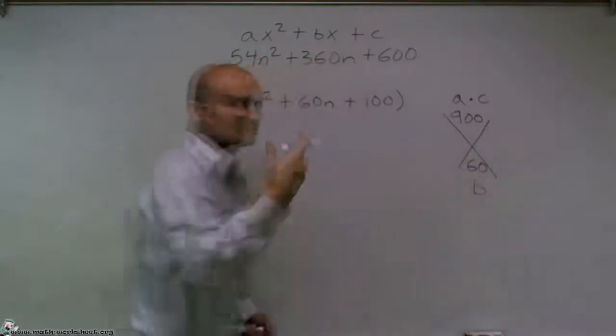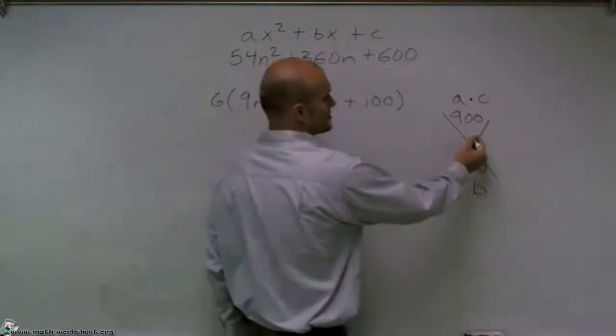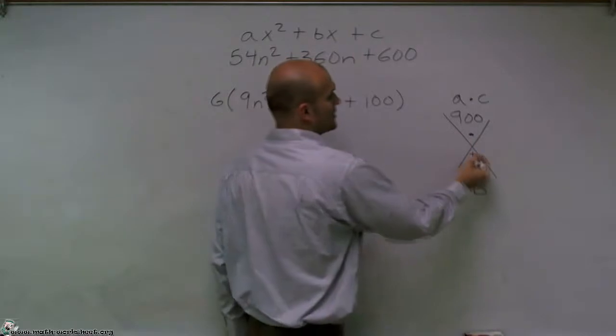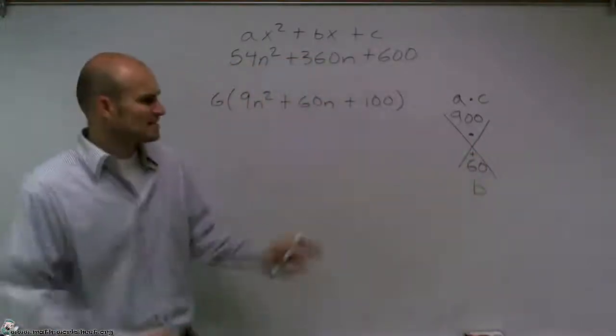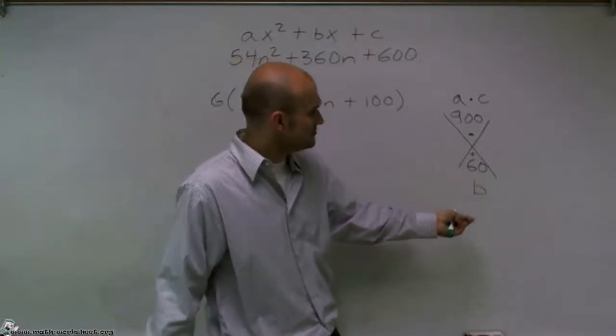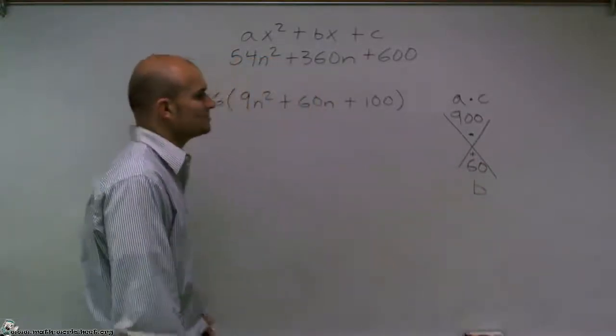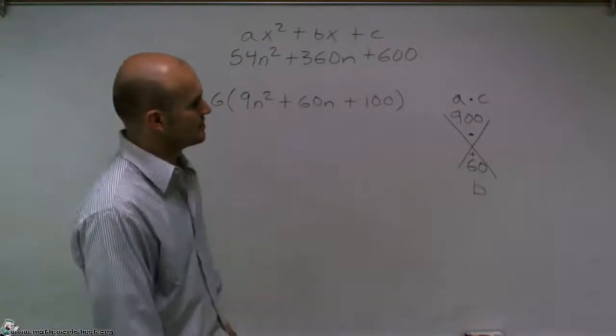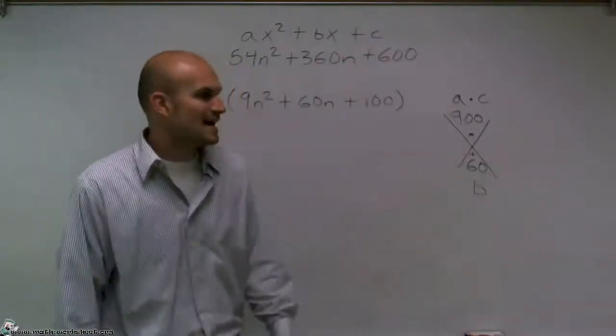So again, I'll say this one more time to make sure. What two numbers multiply to give us 900 but add to give us 60? Now if you think of big numbers, and you kind of actually cancel out the zeros, you'd have what two numbers add up to give you a 6 but then multiply to give you 90.